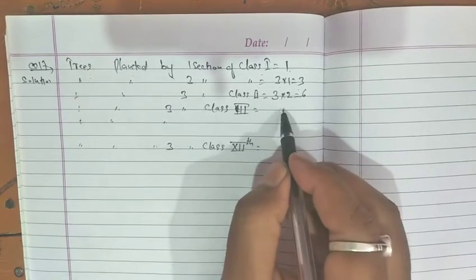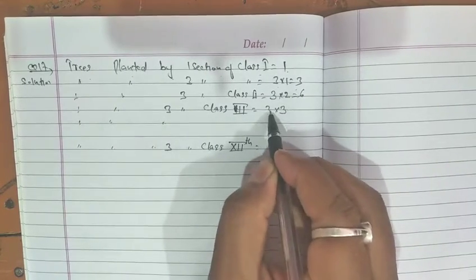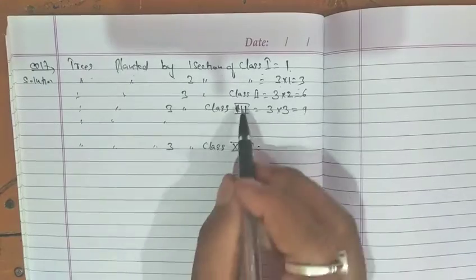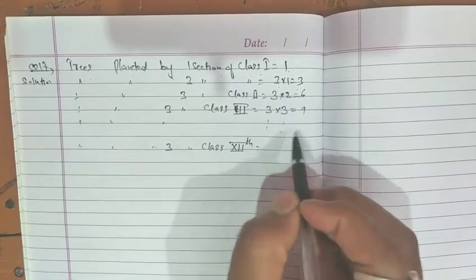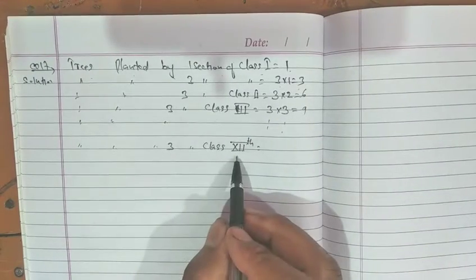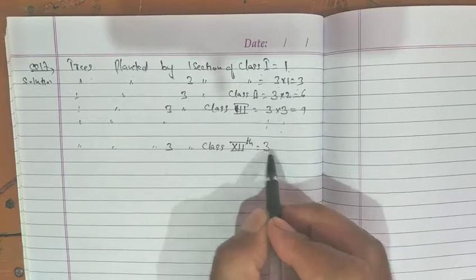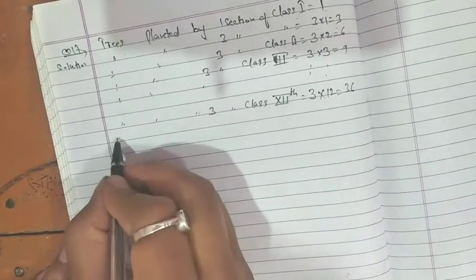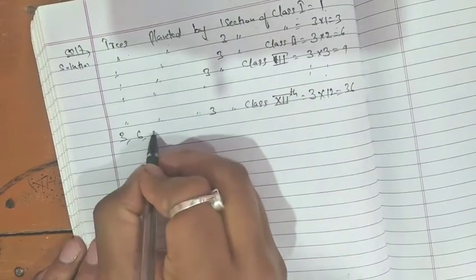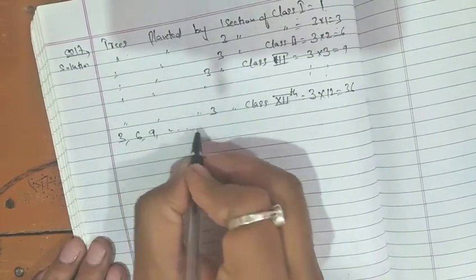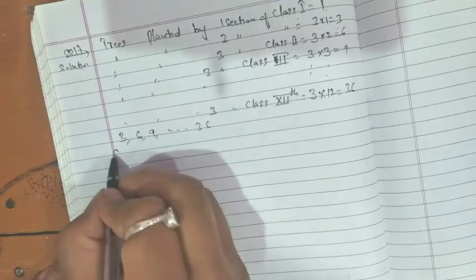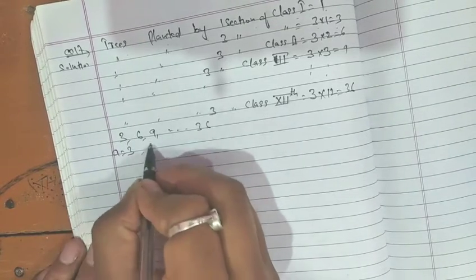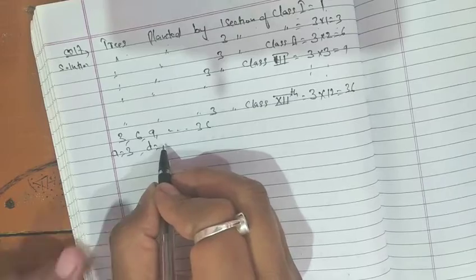Class 1, three sections, so 3, 3, 3, 9. So on, Class 10, Class 12, 36. So first term 3, common difference d, 6 minus 3, second term minus first term, 3. Last term an is 36.